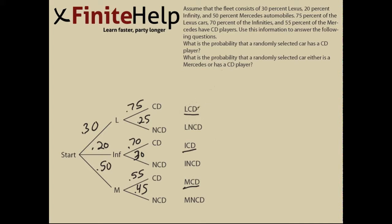To find the probability of a Lexus with a CD player, we multiply the probability of it being a Lexus times the probability of a Lexus having a CD player. That's 0.30 times 0.75, which equals 0.225.